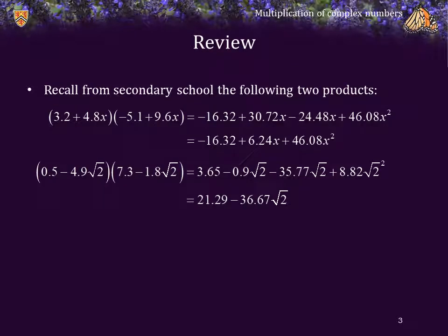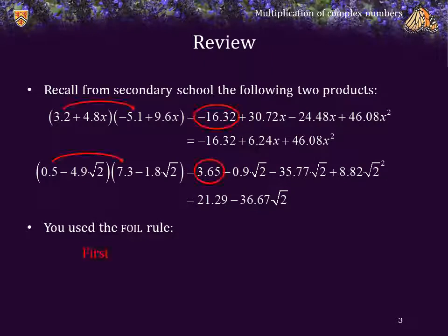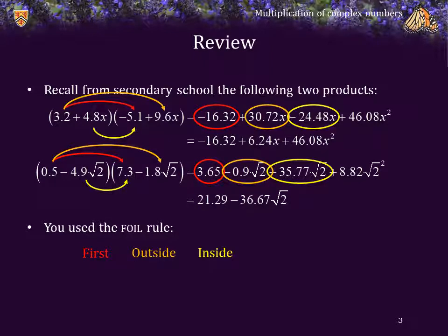Recall from secondary school the following two products. The first is a product of two linear polynomials. The second is a product of two radicals. In each case, you did exactly the same thing — you used the FOIL rule: you multiplied the first, the outside, the inside, and then the last. Then you combined certain terms, or simplified, such as the square root of 2 squared is equal to 2, to get the result.